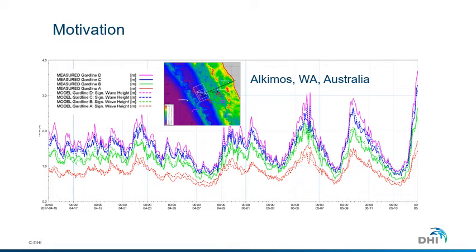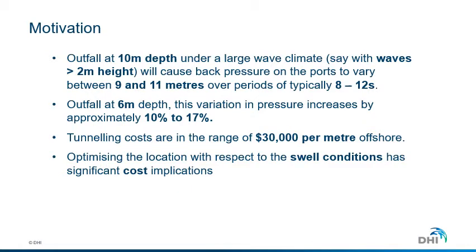The wave-induced mixing is an unquantified mechanism for the permitting and operation of these facilities, and so far we don't know if it is beneficial or deleterious. Discharging under gravity into shallow waters results in lower cost due to a smaller length of pipeline, but this exposes the outfall to more variable back pressure due to increased wave action in shallow waters. If the diffuser is placed in shallow waters, this variation in pressure increases by approximately 10 to 17%. Tunneling costs are in the range of $30,000 per meter, so optimizing the location with respect to soil condition has significant cost implications.